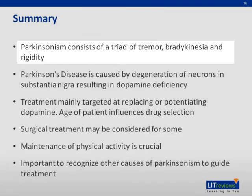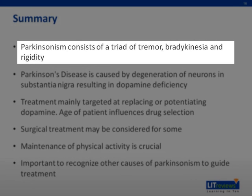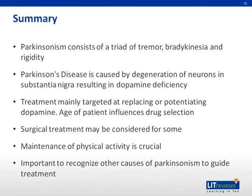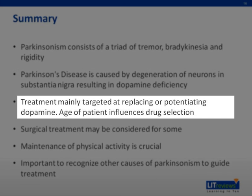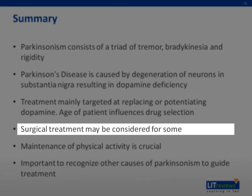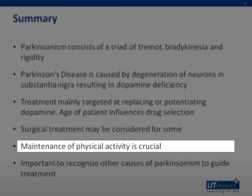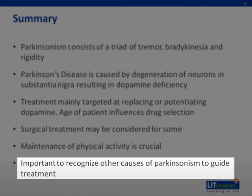In summary, Parkinsonism consists of a triad of tremor, bradykinesia, and rigidity. Idiopathic Parkinsonism is referred to as Parkinson's disease, caused by degeneration of neurons in the substantia nigra resulting in dopamine deficiency. Treatment is mainly targeted at replacing or potentiating dopamine. The age of the patient influences drug selection, and in some cases surgical options with deep brain stimulation should be explored. Maintenance of physical activity is crucial. It is important to recognize other causes of Parkinsonism to guide treatment.